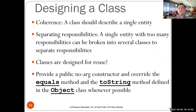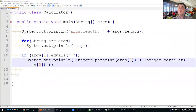When designing a class, design it as a single coherent entity. If it has too many responsibilities, break it into different classes — classes are used for reuse. Always implement an equals method for your classes, and later we'll cover the toString method. That's all for today — thank you for your attention.